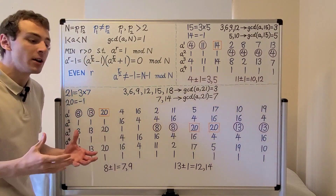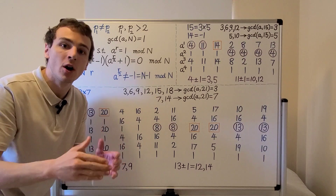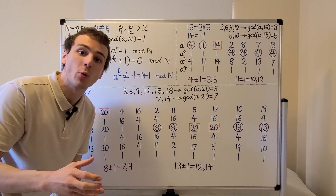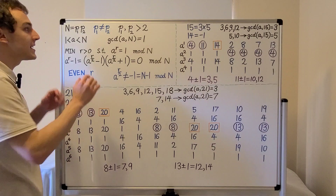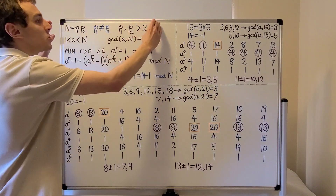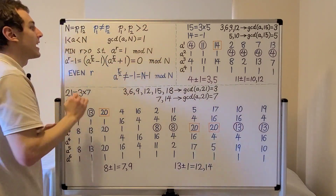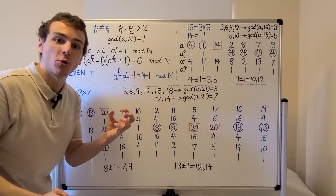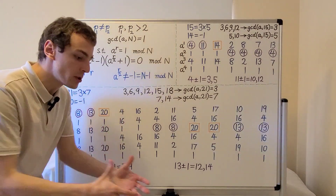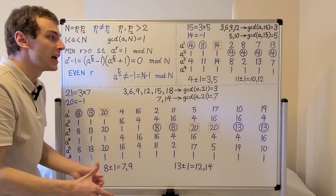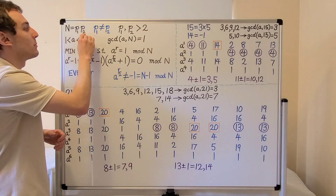So we're looking for an odd semi-prime number which is not the square of a single prime number. That is the scenario we're interested in. We take this n as the input to Shor's factoring algorithm, and the output of the algorithm is going to be the two prime factors p1 and p2.